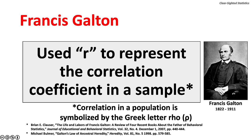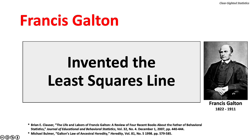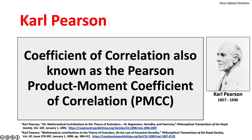Francis Galton coined the term correlation in the 1880s and used r to represent the correlation coefficient in a sample. Correlation in a population is symbolized by the Greek letter rho. Galton invented the least squares line, also known as the regression line — the line that makes the vertical distance from the data points to the regression line as small as possible. From 1893 to 1904, Carl Pearson wrote a series of papers developing and refining many statistical techniques, including correlation, regression, standard deviation, and chi-square.